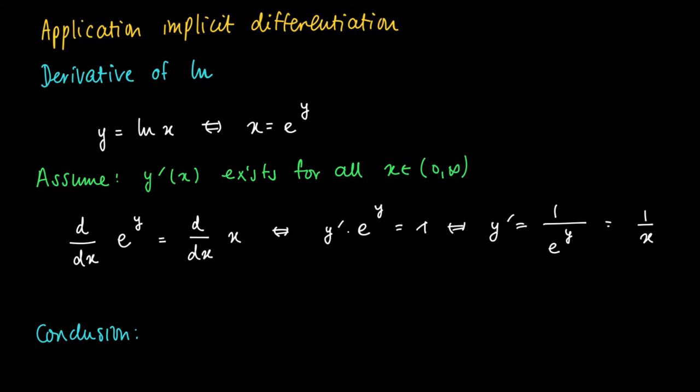So we get as the derivative of the natural logarithm that its derivative with respect to x equals 1 over x.